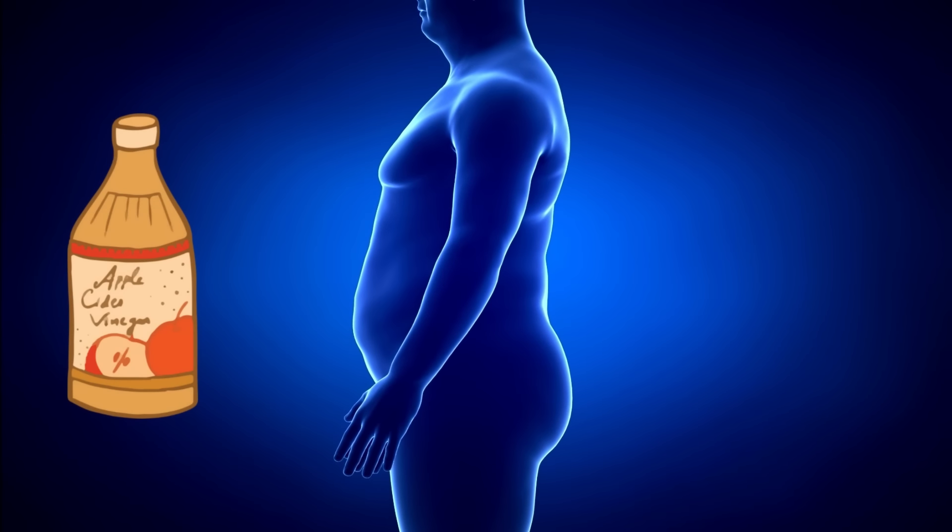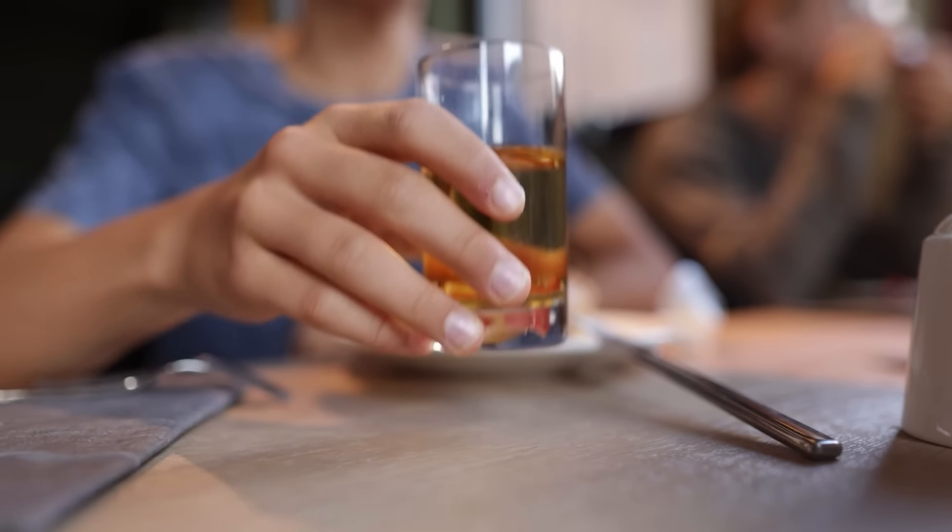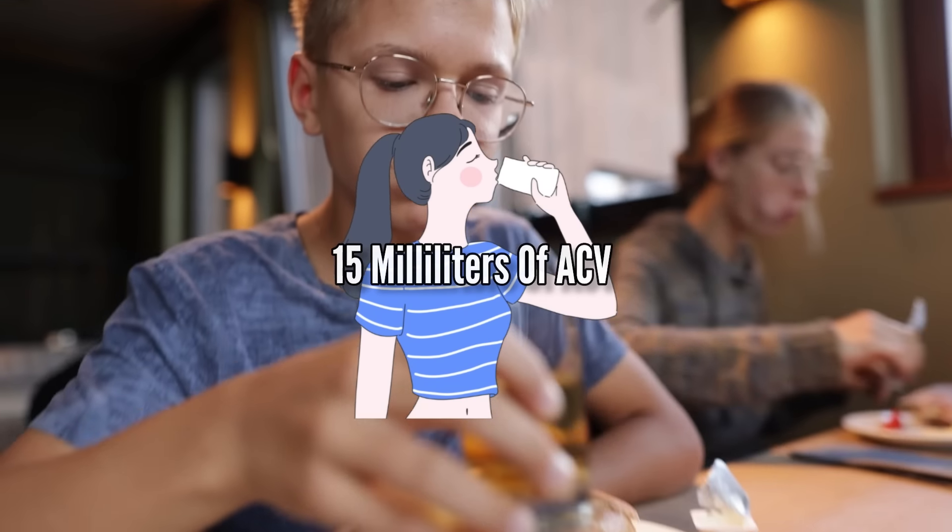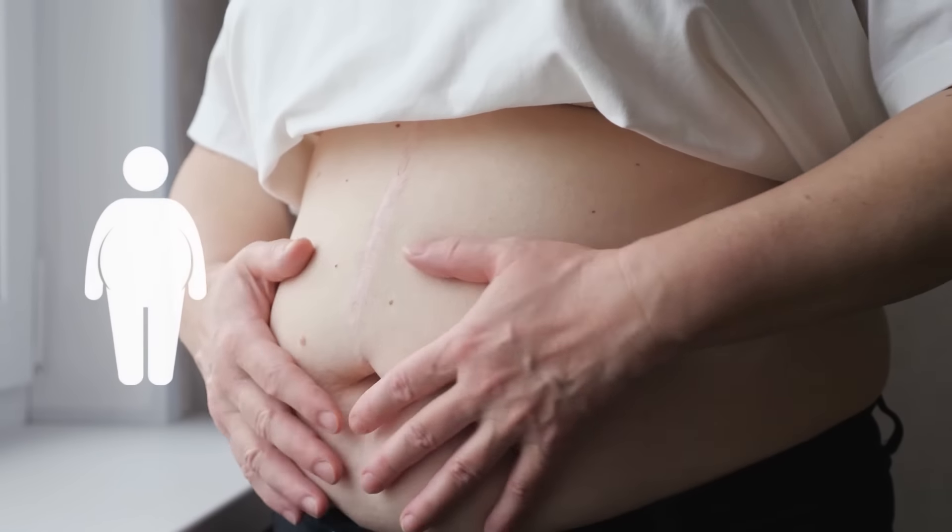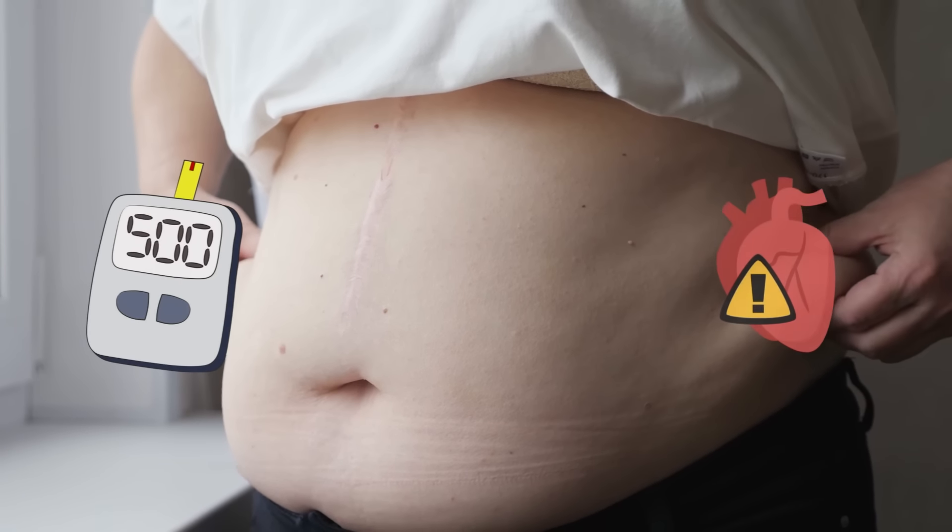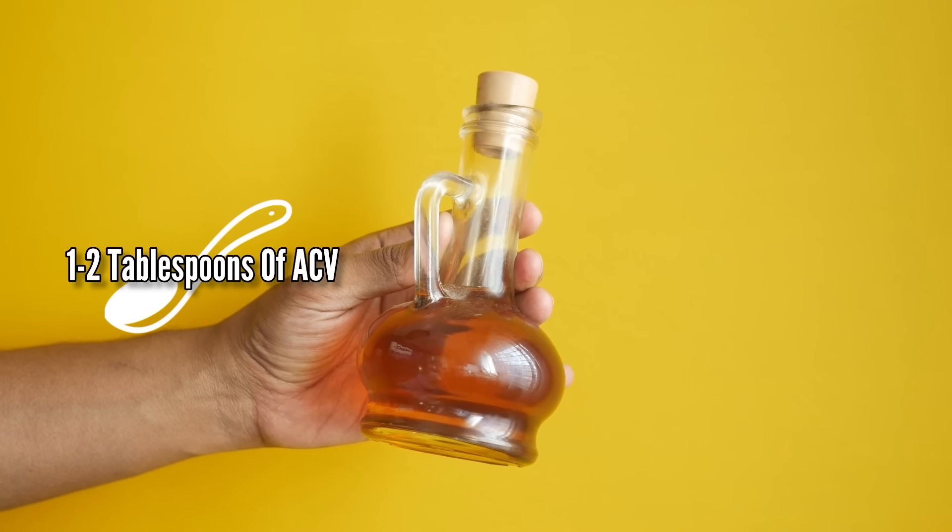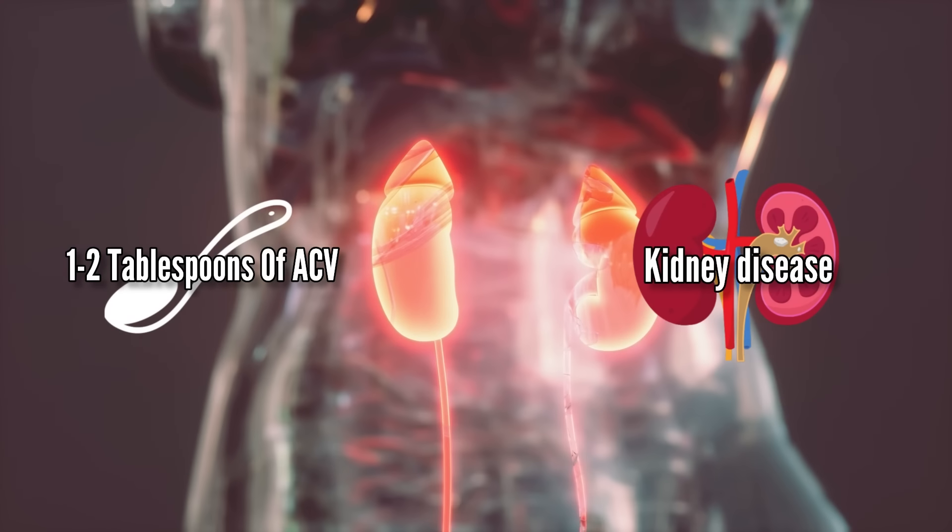But wait, ACV can also help you lose weight. During a study, experts observed that people who had about 15 milliliters of ACV with lunch and dinner lost almost double the weight compared to others. Obesity or too much weight is also a major risk factor for diabetes and heart disease. So having 1 to 2 tablespoons of ACV daily can really help you avoid many health conditions, including kidney disease.